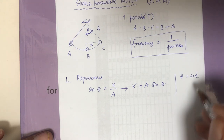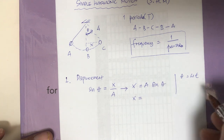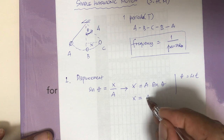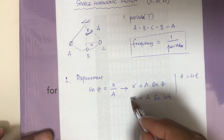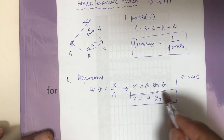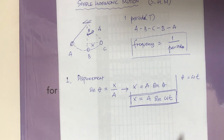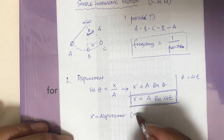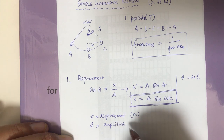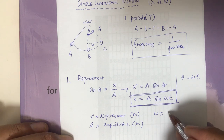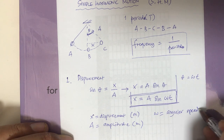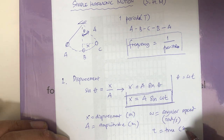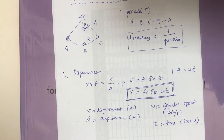Since x equals A sine theta, and theta equals omega t, we get x equals A sine(ωt). Sometimes A is also written as x₀. So the displacement equation is x = A sin(ωt), where x is displacement in meters, A is amplitude in meters, ω is angular velocity in radians per second, and t is time in seconds.